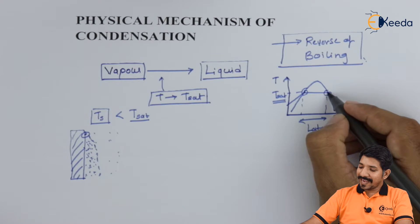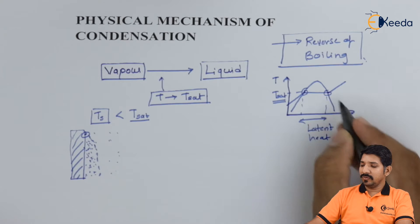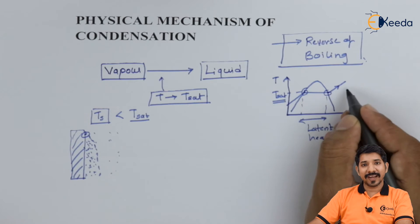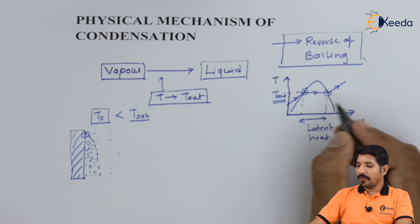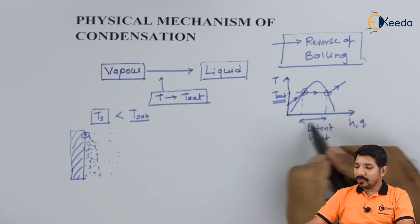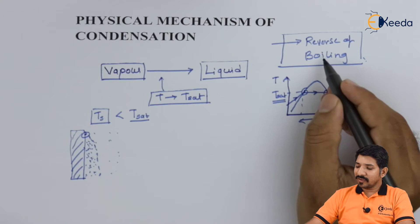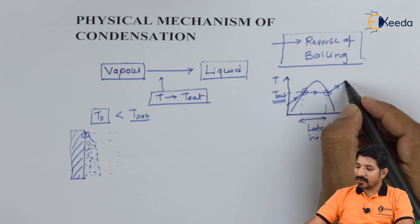After that, if I keep increasing the value of q, the temperature will start increasing again. This was the case of boiling. In the case of condensation, we will start from this point.